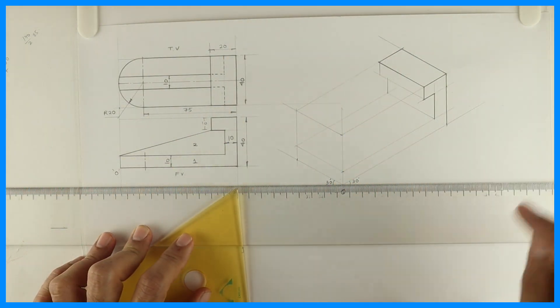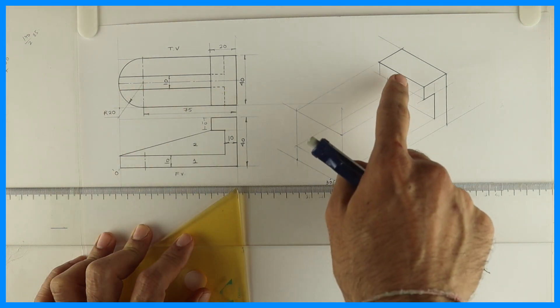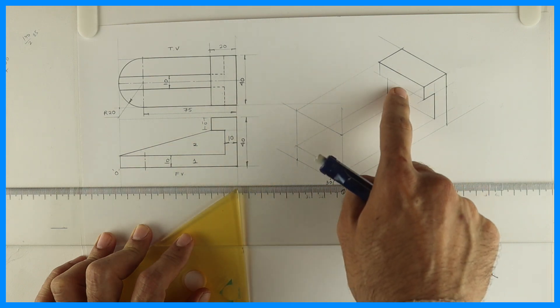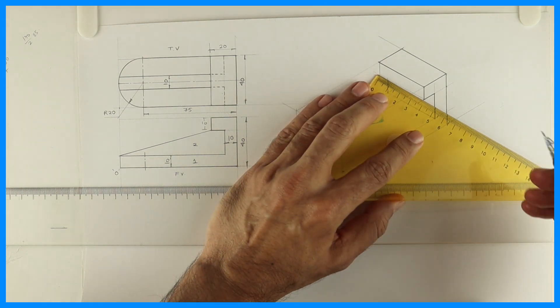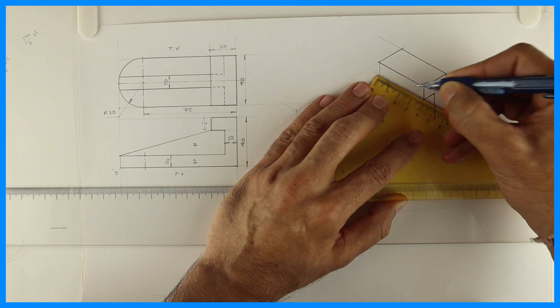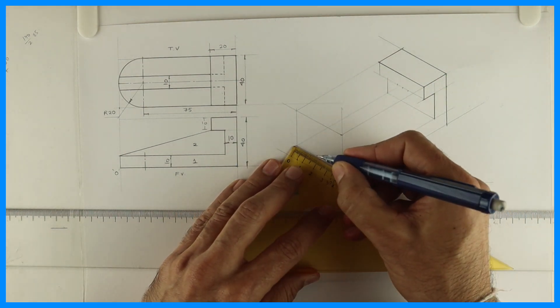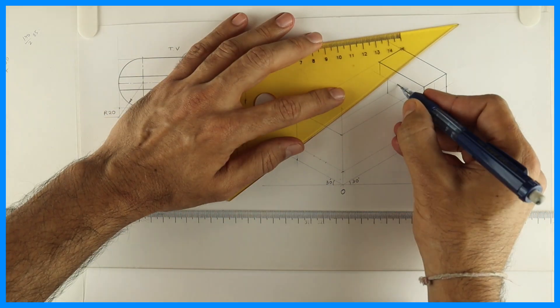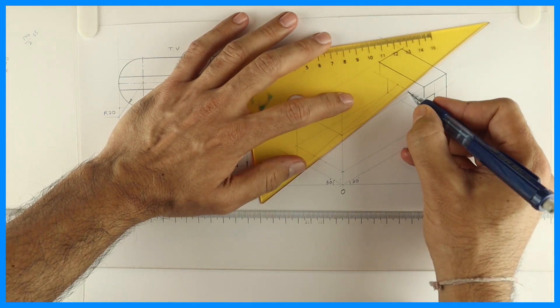Now see this. We have to draw part two, which is 10mm. So I will take the center point and take 5 on both sides. Then you join this, so you'll get that slope.